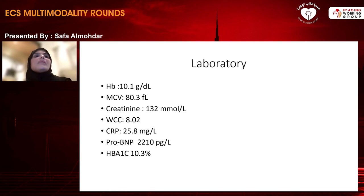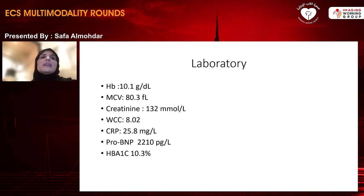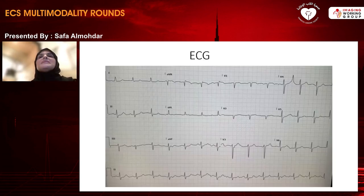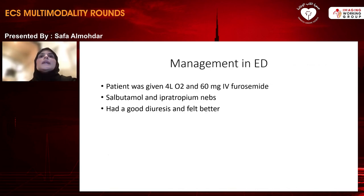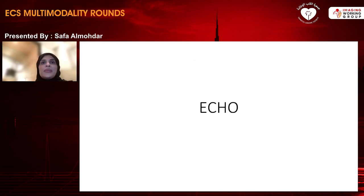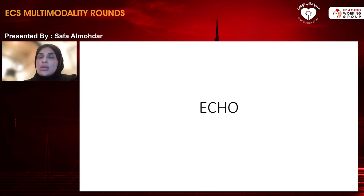Initial laboratory investigations revealed normocytic anemia with hemoglobin of 10, creatinine elevated at 130 mmol/L, white cells normal, CRP mildly elevated, pro-BNP above 2,000, and HbA1c elevated at 10.3. Her initial ECG in the emergency showed normal sinus rhythm with no significant ST changes. She was managed with 4 liters of oxygen, intravenous furosemide, nebulizers, had good diuresis and felt better, and was referred to us the next day for further evaluation.